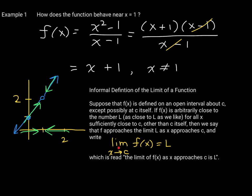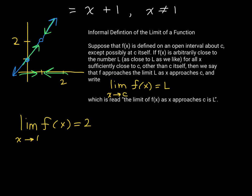This is written as: the limit of f(x) as x approaches c is L. In our example, the limit of f(x) as x approaches 1 is 2. You can also write it with the actual function: the limit of (x² - 1)/(x - 1) as x approaches 1 is equal to 2. What I'd like to highlight is that the limit of this function actually exists as x approaches 1 — it's 2 — although the function is not defined at x = 1. We do not need the function to be defined at c in order for the limit to exist.